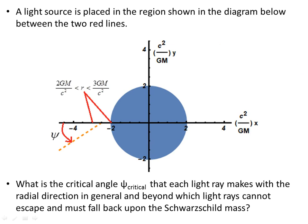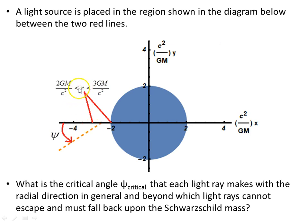Let's say we have a light source placed in the region just outside the Schwarzschild radius. For the sake of the diagram I've just picked along the horizontal axis here for illustration purposes, but this entire circular region around the Schwarzschild radius — the light source could be placed anywhere within there, from 2GM/c² (the Schwarzschild radius) up to 3GM/c², or one and a half times the Schwarzschild radius. For visualization purposes it's easy to place it at 2.5GM/c² on the horizontal axis.